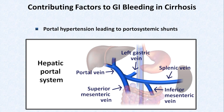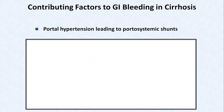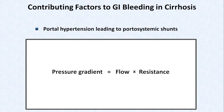In cirrhosis, both resistance to portal blood flow increases, as well as the portal flow rate itself, so there is more blood trying to squeeze through tighter blood vessels. As you may recall from physiology, the pressure gradient between two points equals the flow times resistance, so this leads to a higher pressure in the portal vein. High pressure in the portal vein results in blood being redirected to alternate routes back to the heart.